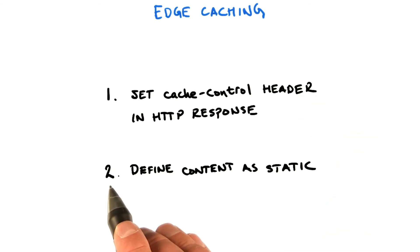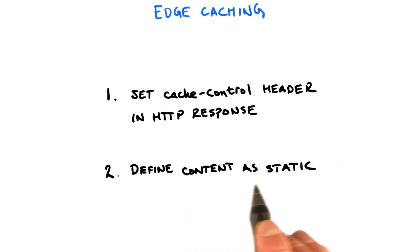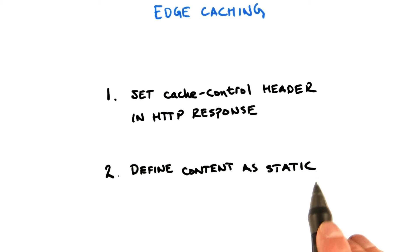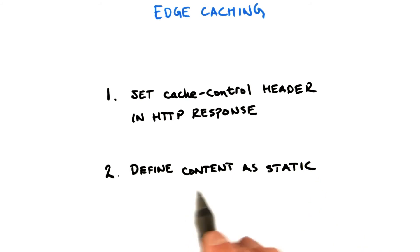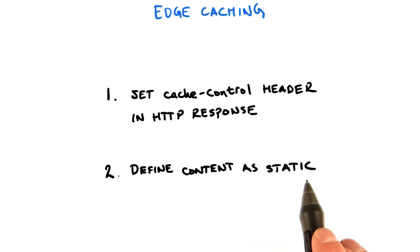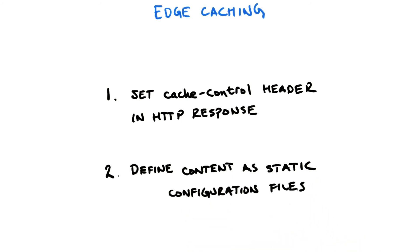The second option is to define as much content as possible as static. Since static content does not change, it's great for edge caching. You can define which content is static through configuration files.